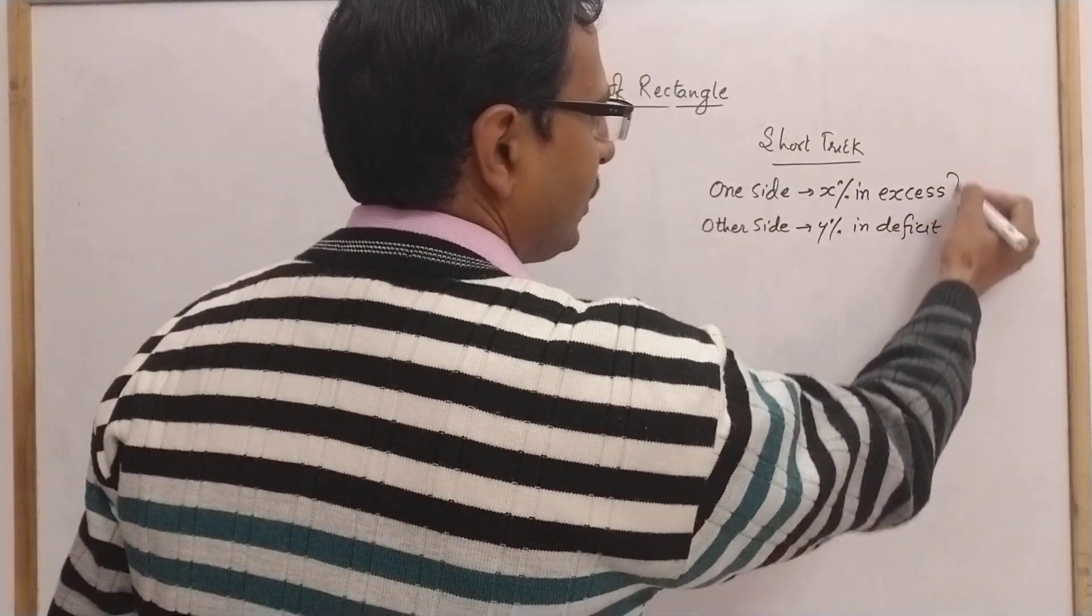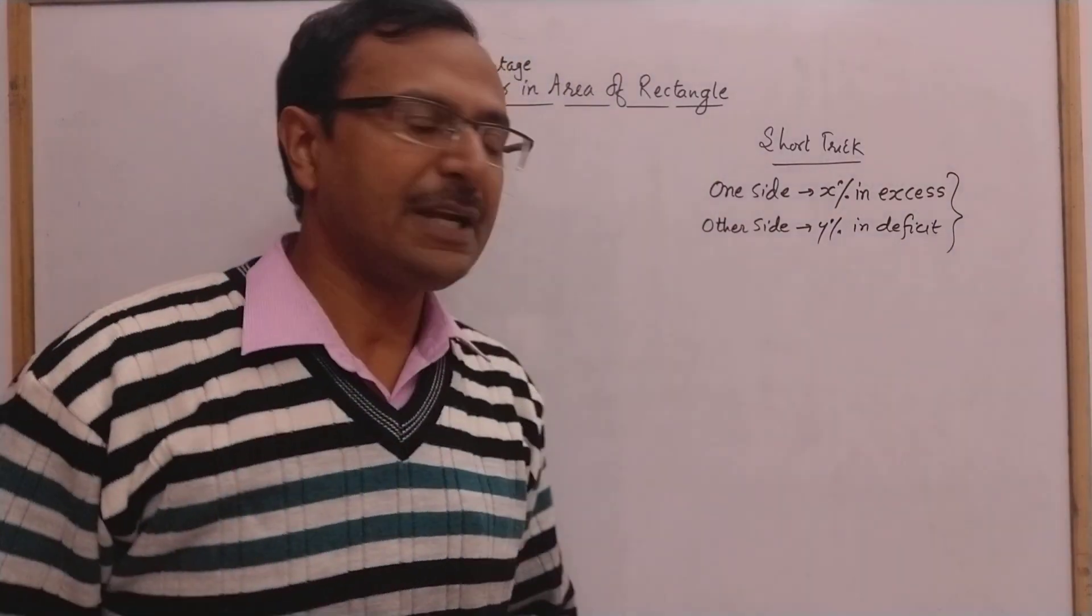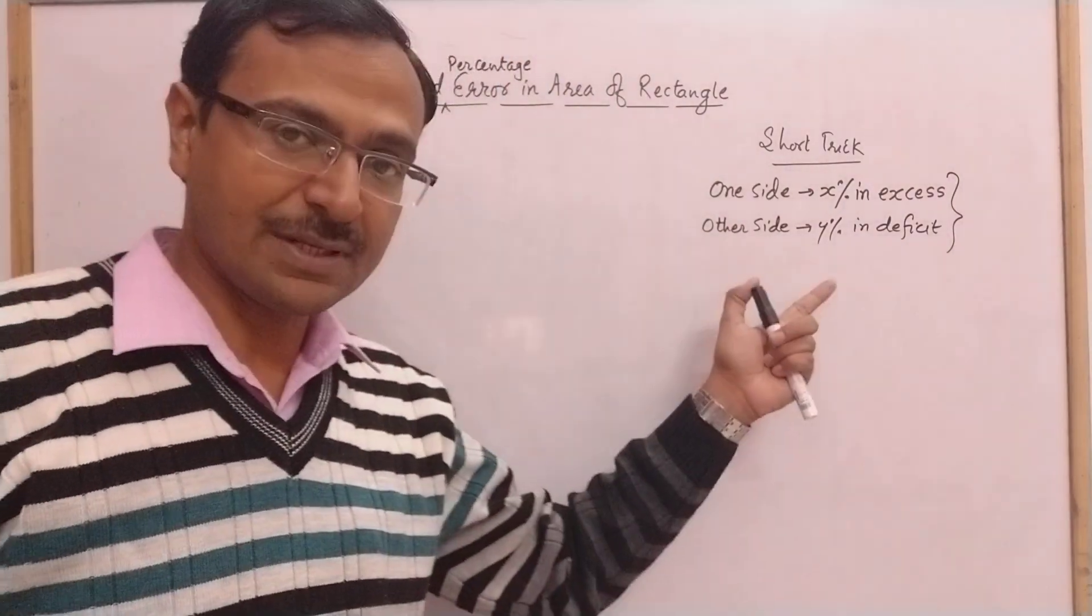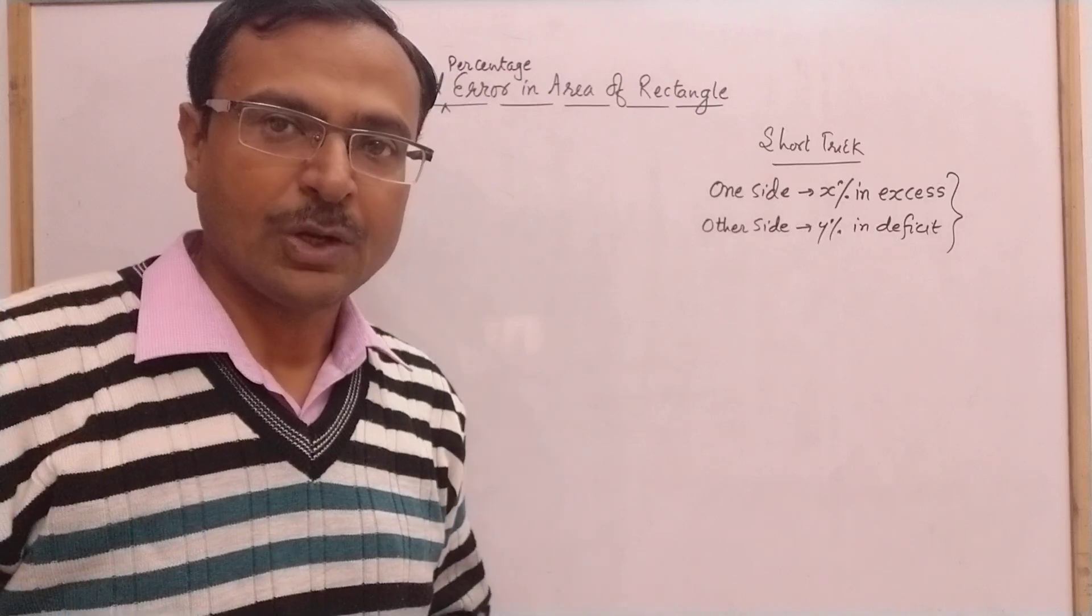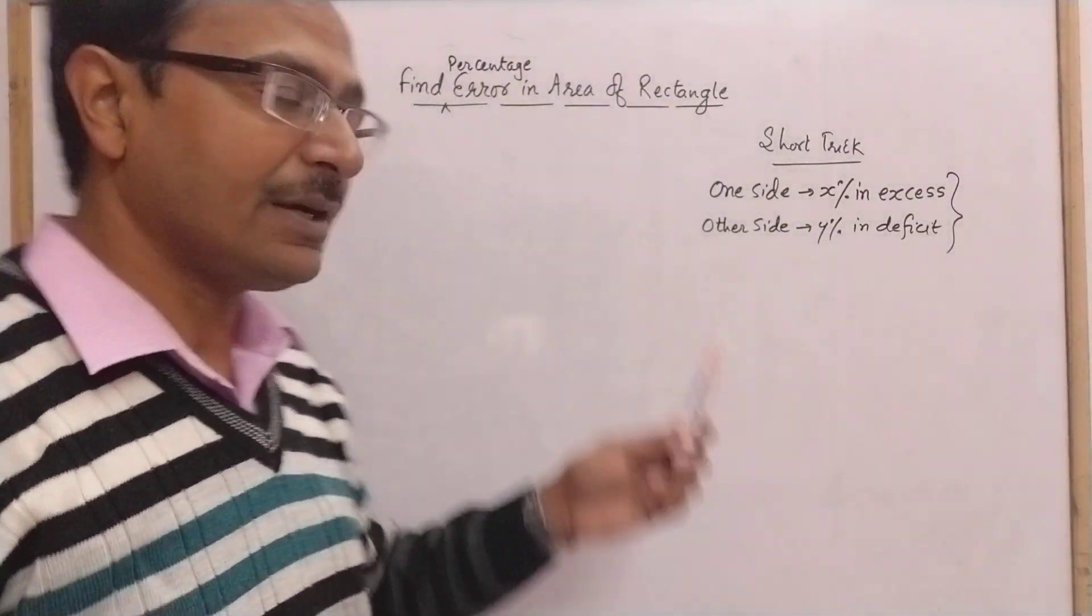This is the scenario now: one of the sides has been taken x percent in excess and the other side y percent in deficit. Now we need to find the percentage error in the area.